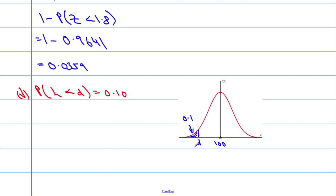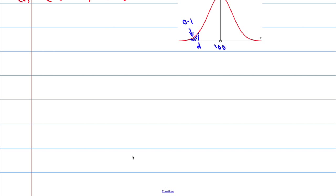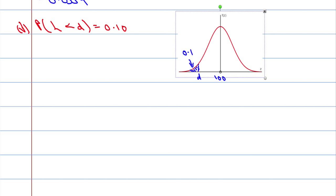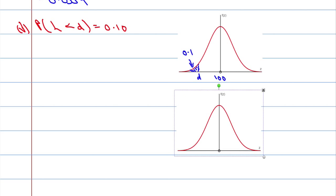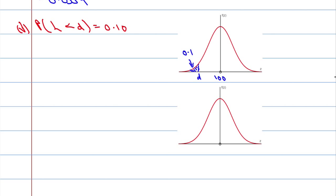Where would we get D from? By standardising. There is some Z value that I would have standardised D from — it will have the same probability, 0.1. So the probability that the standard normal is less than little z equals 0.1.